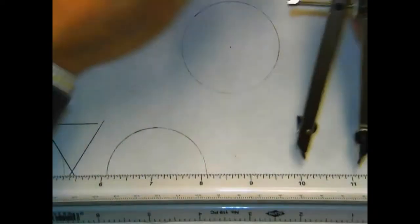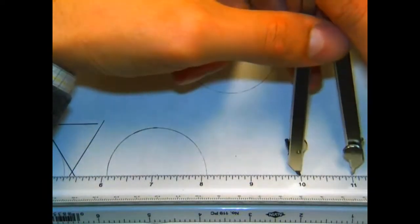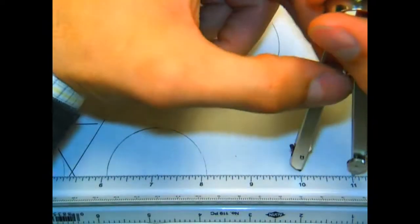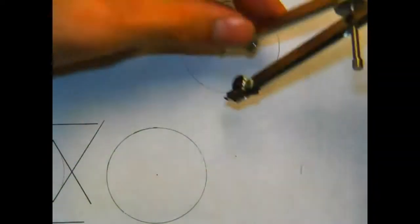Drawing an arc tangent to two arcs is very similar to drawing an arc tangent to an arc and a line, except this time we have two arcs to offset by our desired radius distance.